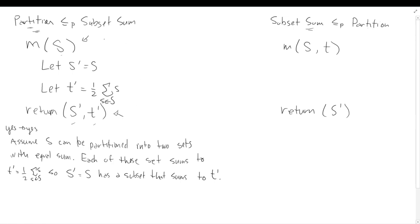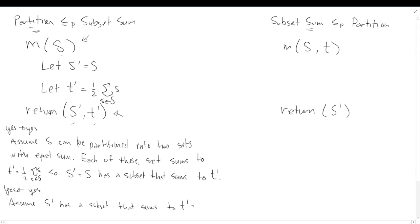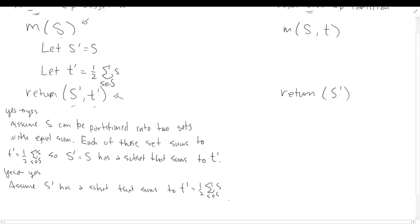Now we need to do the other argument. I usually like to go backwards, which allows me to repeat the same argument in reverse order. So now assume that S prime has a subset that sums to T prime, which equals one half of the sum of all elements in S. Then the remaining elements sum to the same value. So S, which equals S prime, can be partitioned into two sets with equal sum. And we're done.